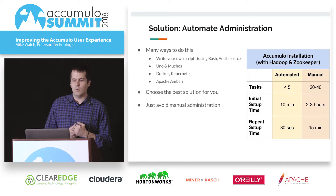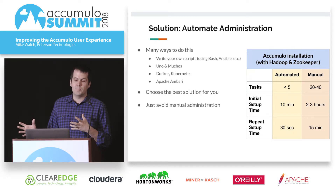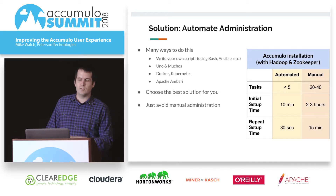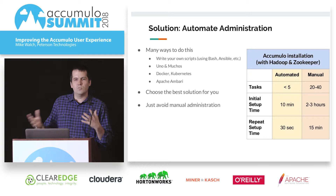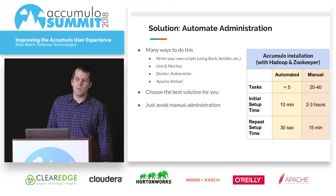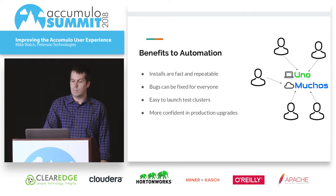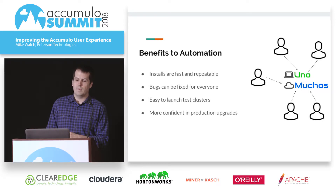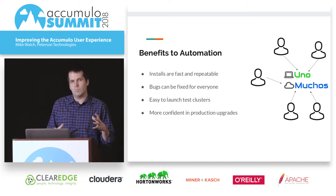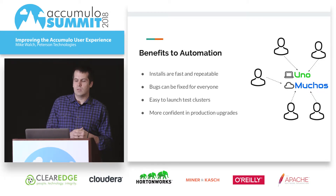There are many ways to do this. I'm going to talk about Uno and Muchos, which I've helped create, that does the automation — though it's outside of Accumulo, and there are other outside tools that can do this too. The key takeaway isn't that you need to use Uno and Muchos; you should just find some way to automate your workflow, either using another tool or building your own, because it really saves time for users and minimizes problems in development environments where people have things set up incorrectly. Here are some benefits of automation: installs are fast, you can repeat them, and if you find a bug and want to do another test, you can set it up again.